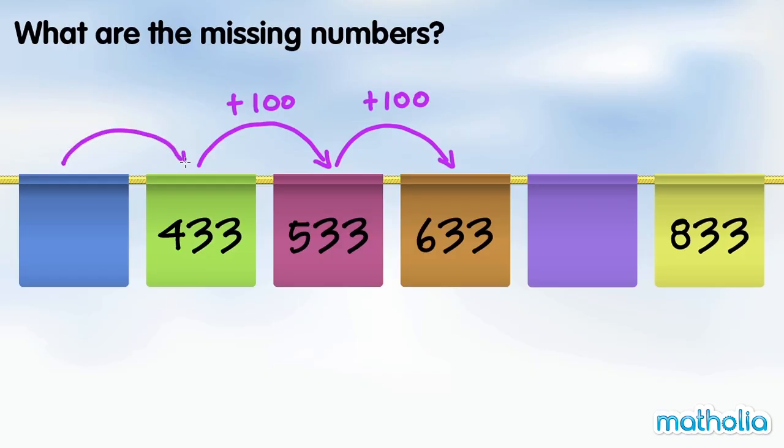This number plus 100 equals 433. The missing number is 100 less than 433. 100 less than 433 is 333. 633 plus 100 equals 733. The missing numbers are 333 and 733.